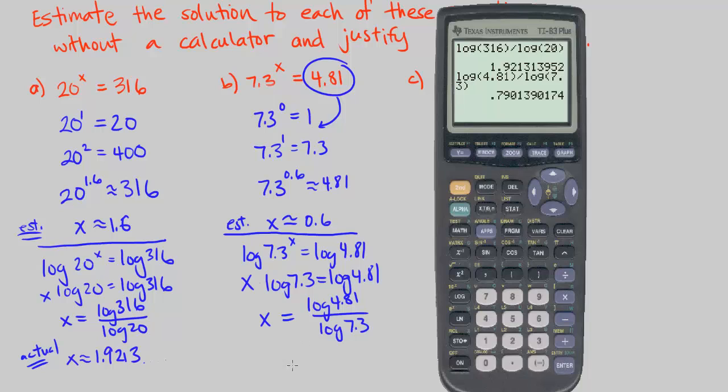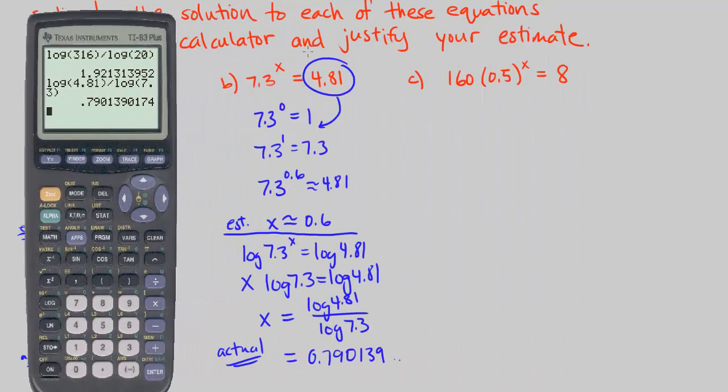And we get, it's actually equal to 0.790139. This is actual versus our estimate. Finally, we have part C. Let's rewrite this. Let's divide both sides by 160.